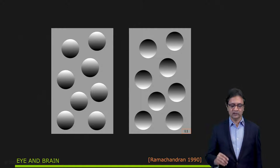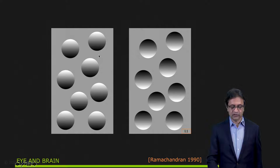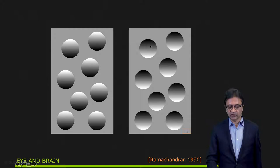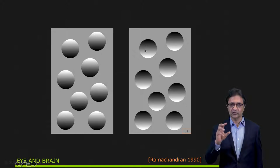Let's take a look at this example. You have two panels with objects on both. Most people would agree that the panel on the left is made of objects that are bumps — spherical, protruding out of the surface, meaning they're convex. And when shown the panel on the right, most people agree that these are actually concavities — things that are jutting into the surface.